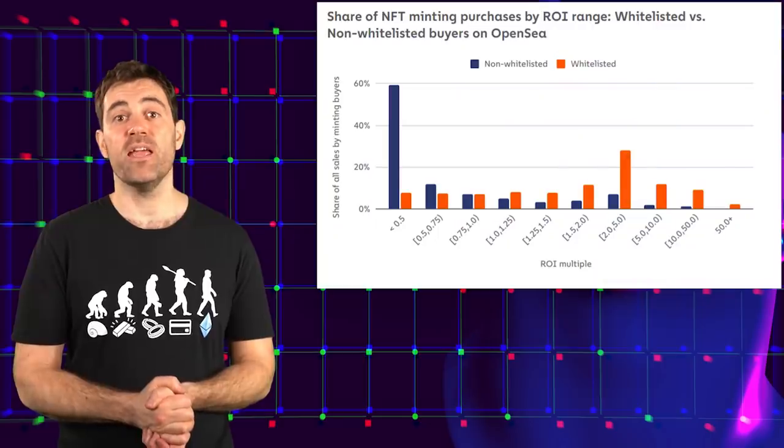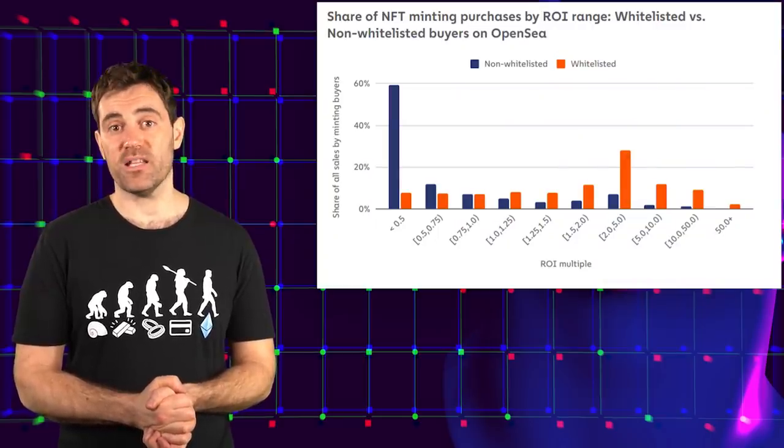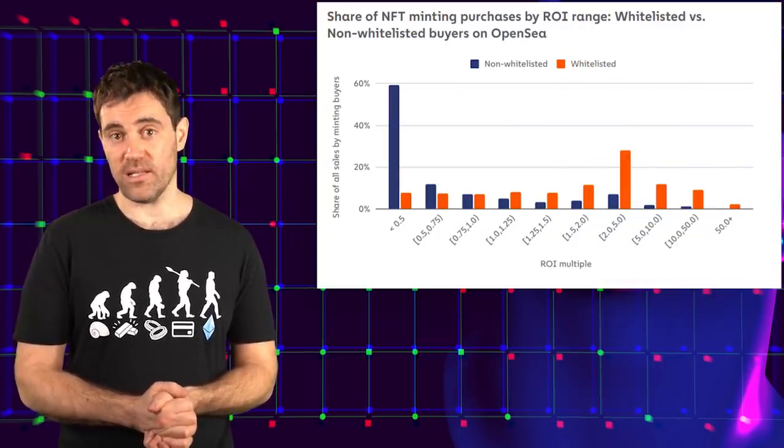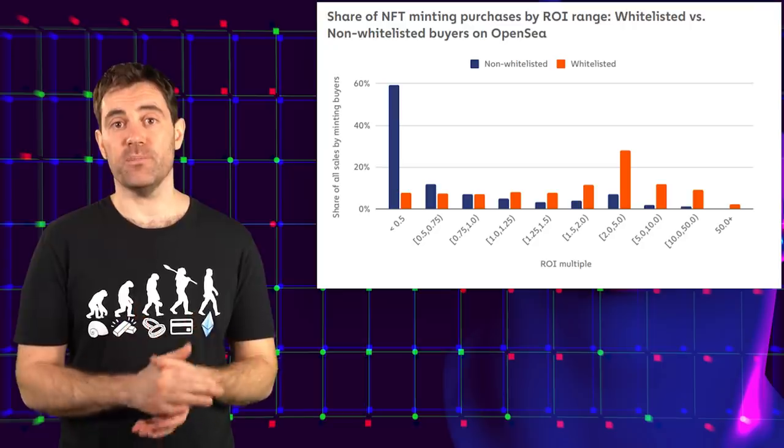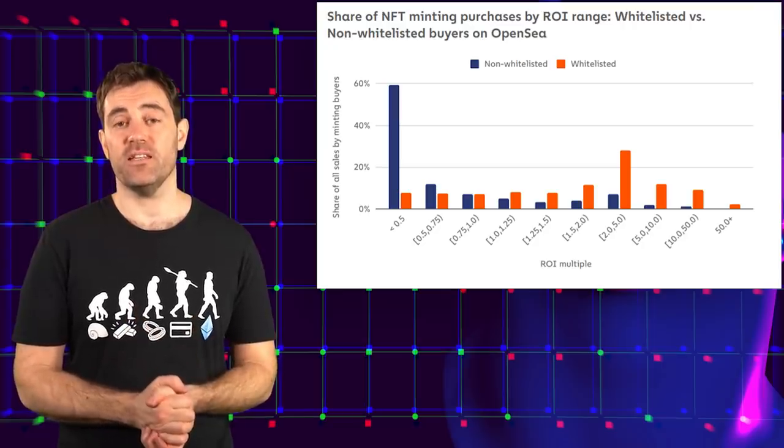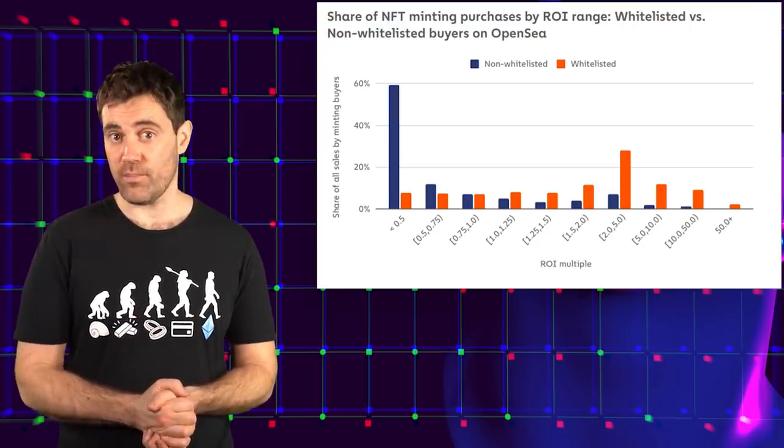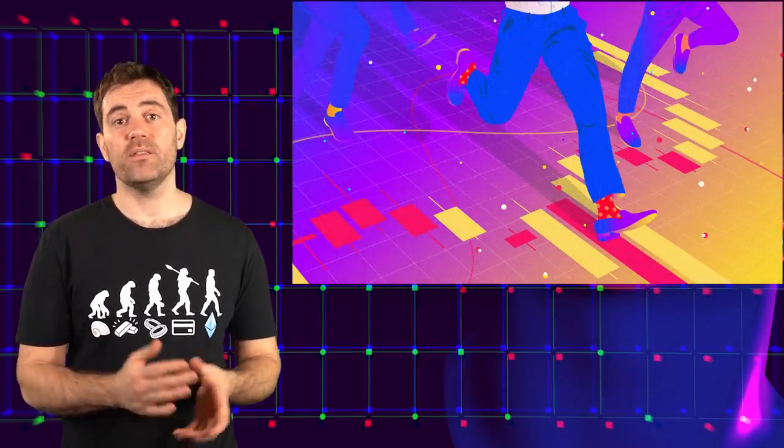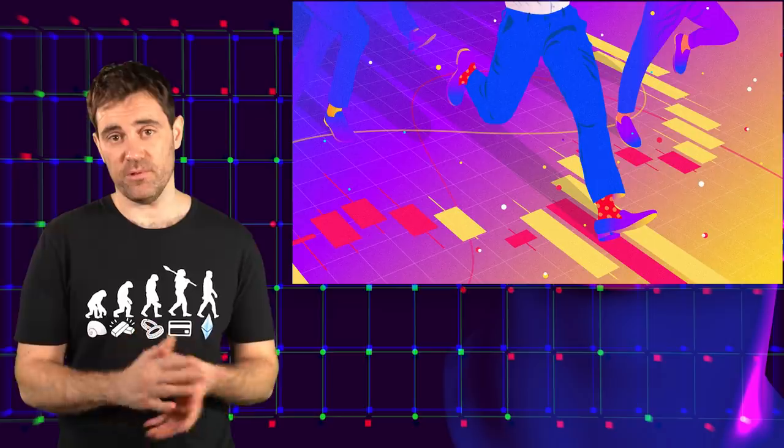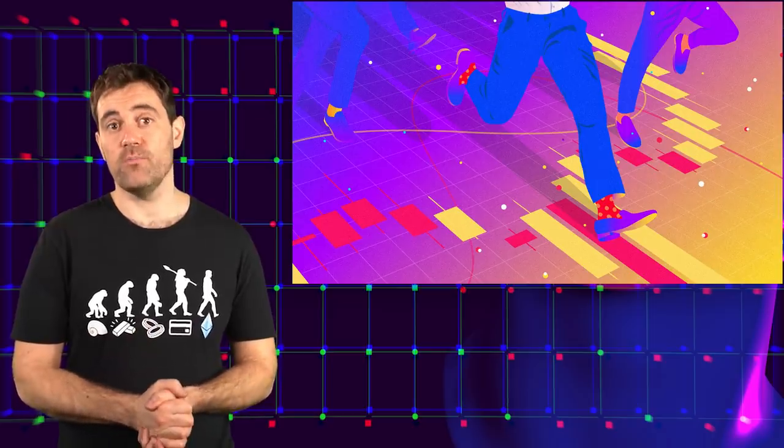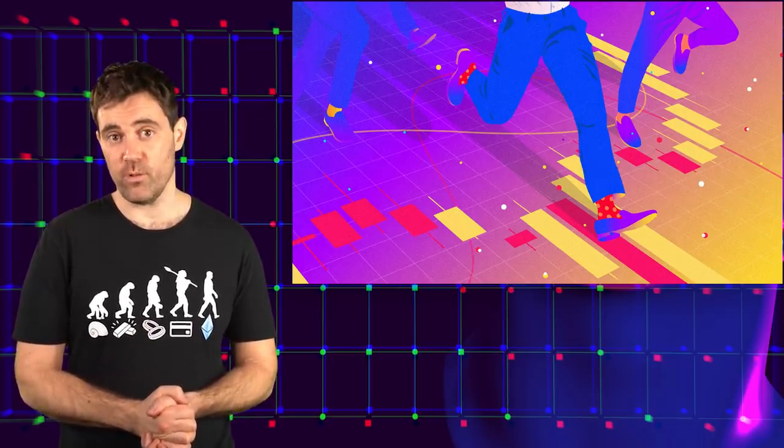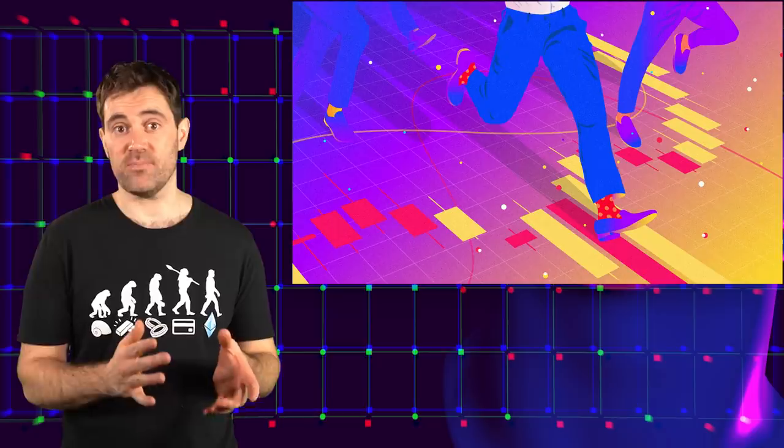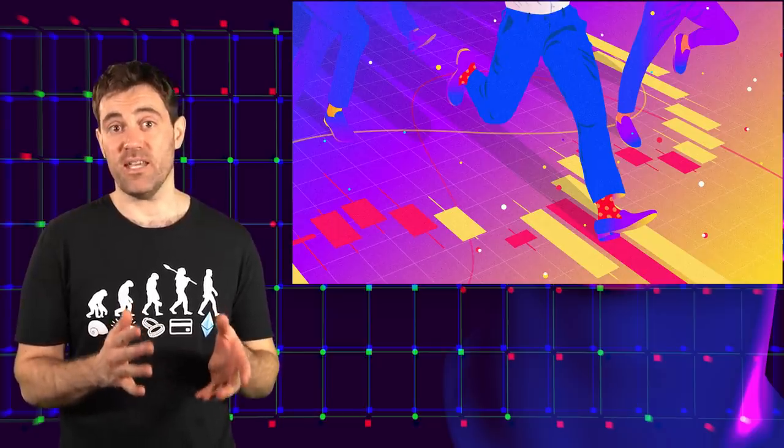What's also interesting is that the NFT sales with the highest profits are those with a whitelist. This is when certain community members are allowed to purchase an NFT in advance, often for a lower price. As highlighted by Chainalysis, the data suggests it's nearly impossible to achieve outsized returns on minting purchases without being whitelisted, though this could just be the basic byproduct of getting in early.